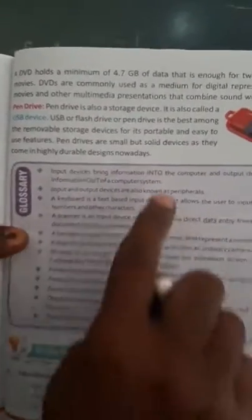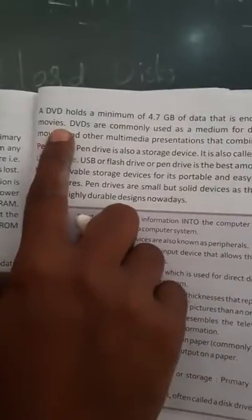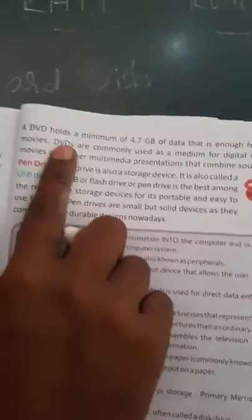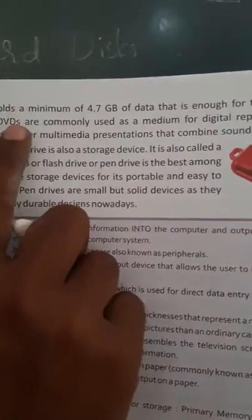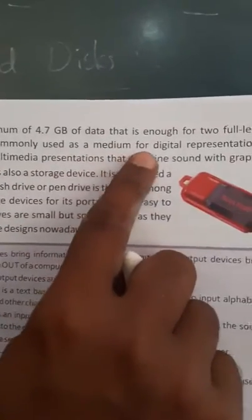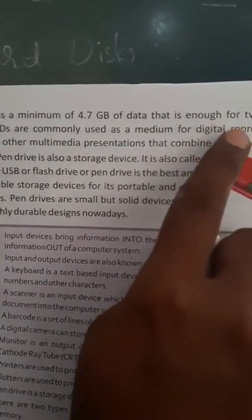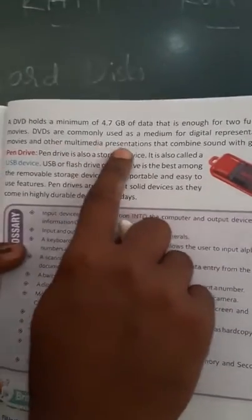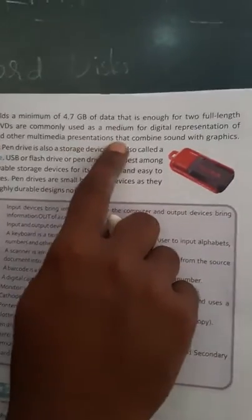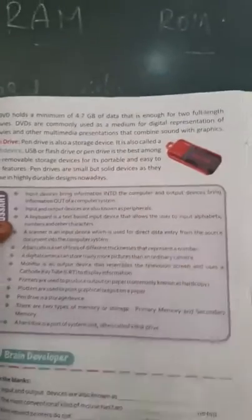A DVD holds a minimum of 4.7 GB of data, that is enough for two full-length movies. DVDs are commonly used as medium for digital representation of movies. For sound and graphics purposes, these DVDs are used.